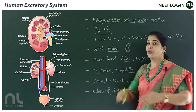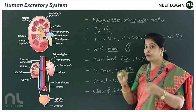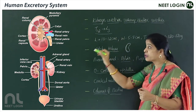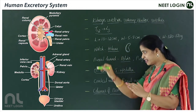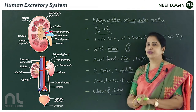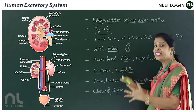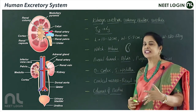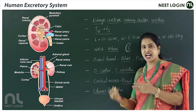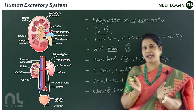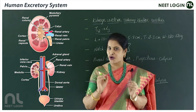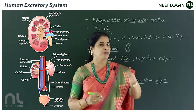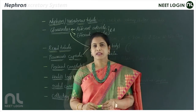Highlighting key points: the kidneys are located from last thoracic to third lumbar vertebrae, attached to the dorsal abdominal wall, and covered by a tough capsule. Key structural features include the cortex, medulla, renal pyramids in the medullary region, hilum notch, the funnel-shaped renal pelvis, its projections called calyces, and the columns of Bertini as extensions of cortex into medulla.